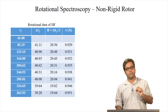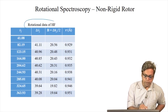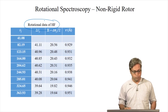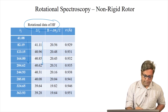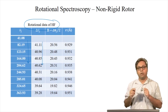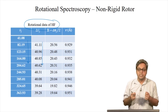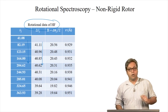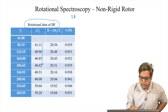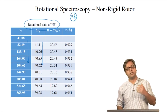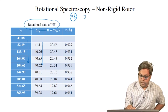Let us look into more details using another set of data obtained from the rotational spectrum of HF. Here also we see the same trend in the frequencies and the frequency gaps between successive lines. We can see that the separation between successive lines changes with J because the apparent separation between two lines is given by 2B. We can think that the rotational constant B is decreasing as J increases.